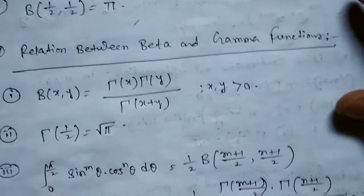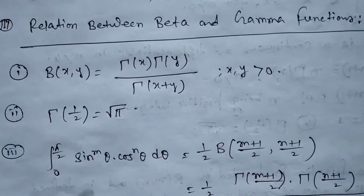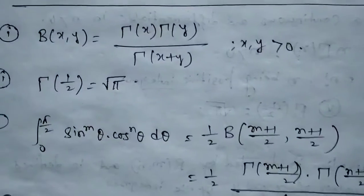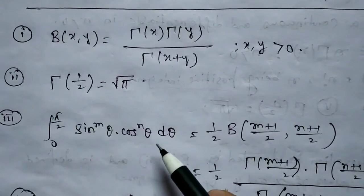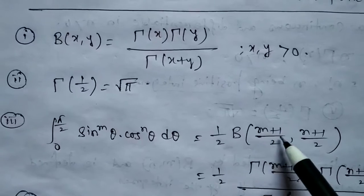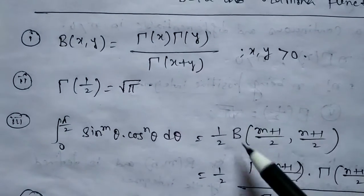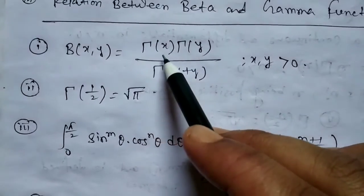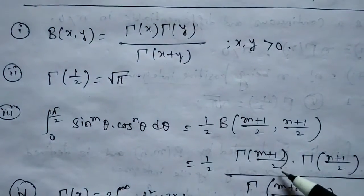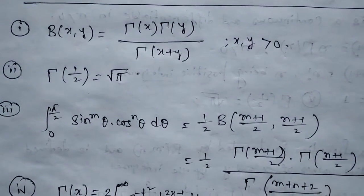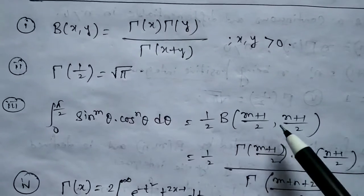Relation 3: The integral from 0 to π/2 of sin^m(θ) · cos^n(θ) dθ = (1/2) · β((m+1)/2, (n+1)/2). Using the Beta-Gamma relation, this equals Γ((m+1)/2) · Γ((n+1)/2) divided by Γ((m+1)/2 + (n+1)/2).